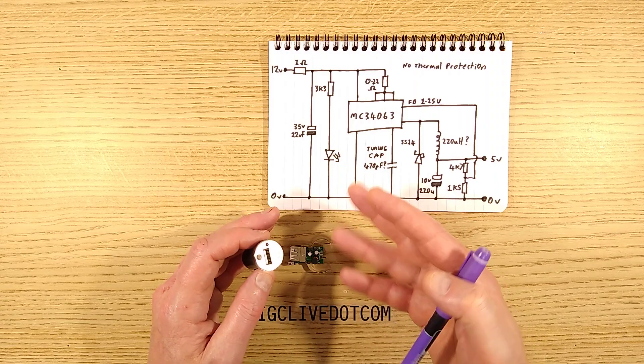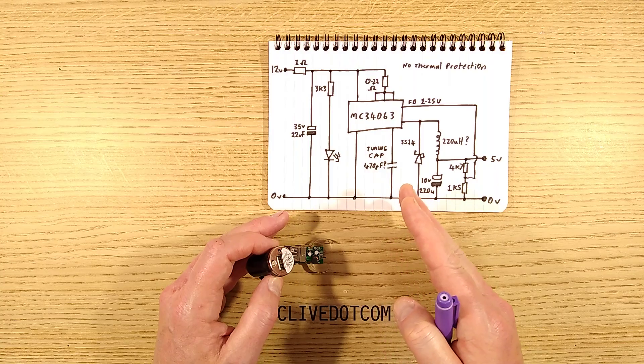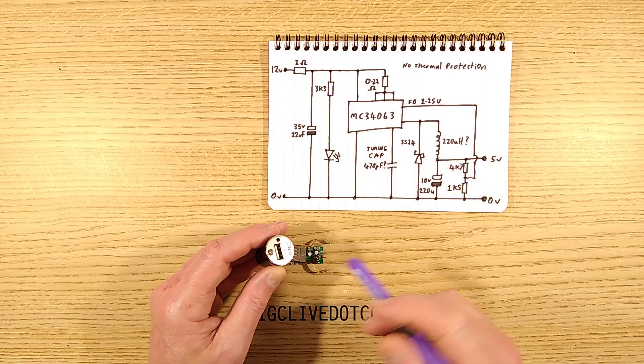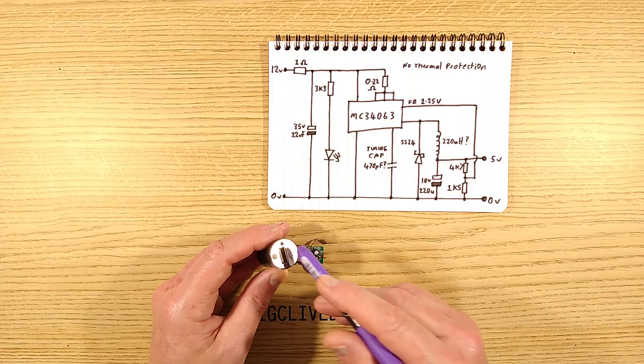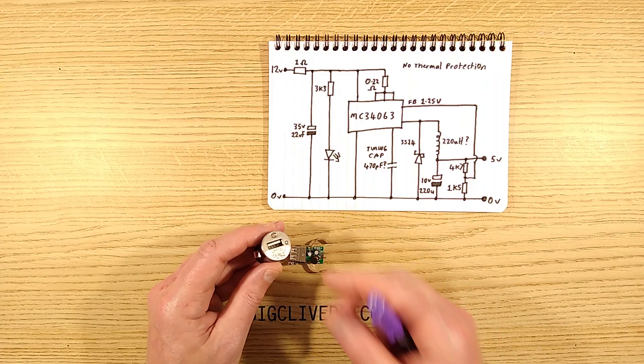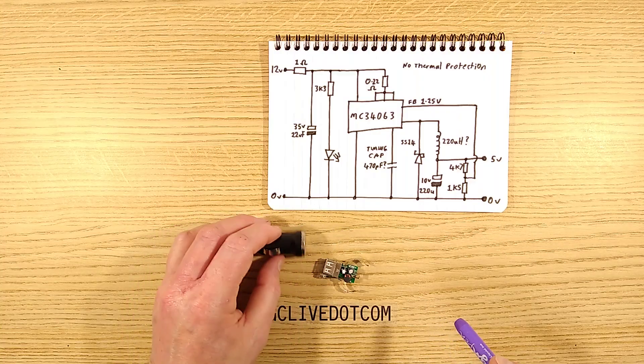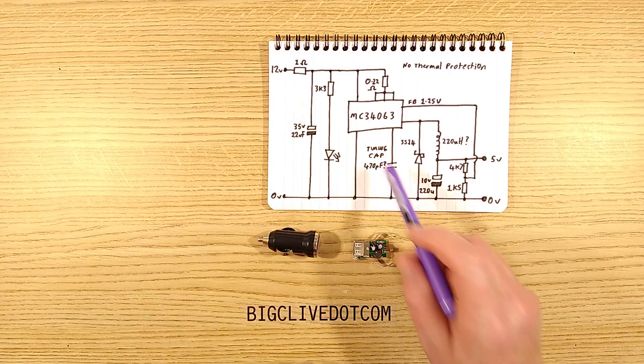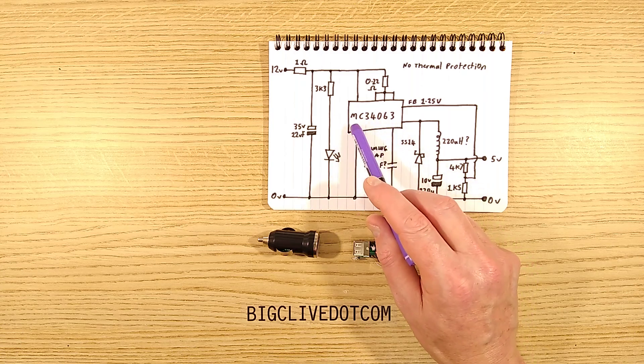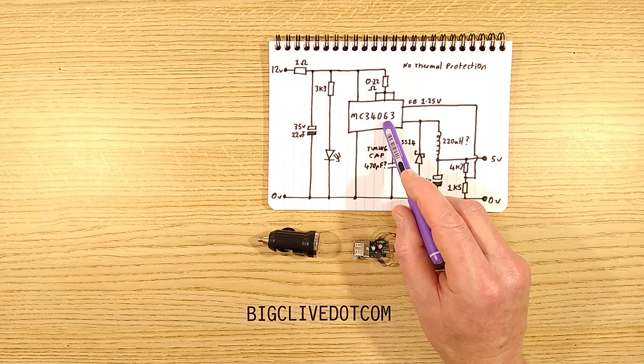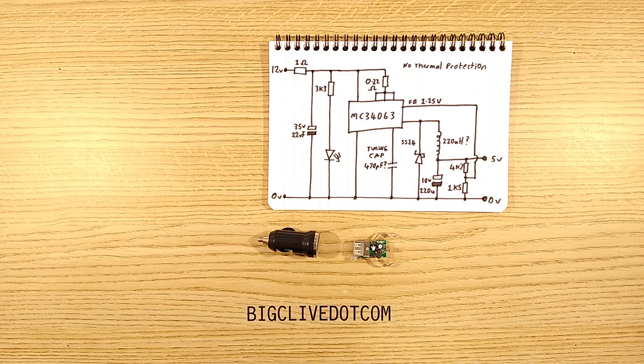I would guess that if you plugged an Android phone into it would do what many of them do and it would gradually creep the current up from a low level until it saw the voltage drop and then it would nudge back so it probably wouldn't overload it in that sense but it's not worth the risk. These are best kept only for powering small items. But there we go, what turned out as a simple tear down ended up being a bit of a history lesson in this, was it 1983 this chip came out, that's an amazing bit of history.